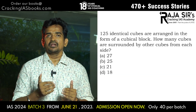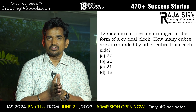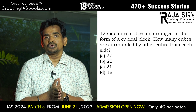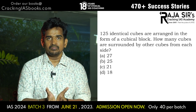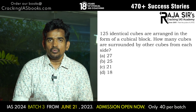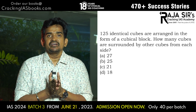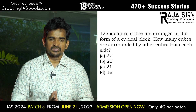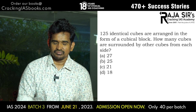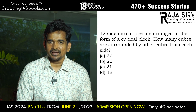In our problem, 125 identical small cubes have been fused together to form a big cube. The question asks for the number of internal cubes. 125 is 5 cubed, that is 5×5×5.